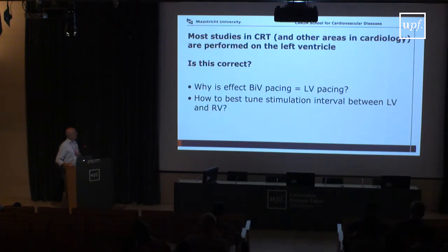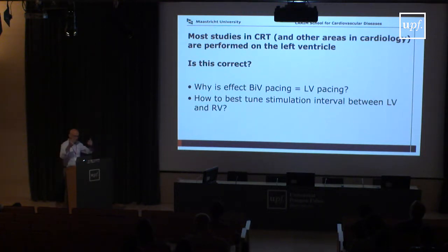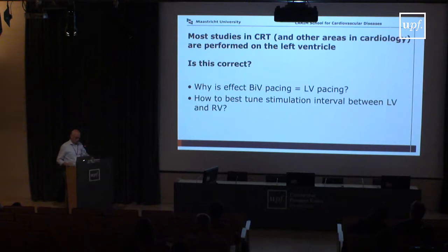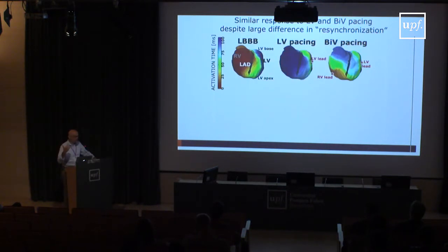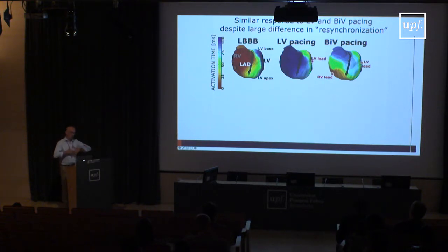Most studies in cardiology and CRT look only at the left ventricle — is this correct? The answer is no. This will be addressed through two research topics: first, why is the effect of biventricular pacing — right and left ventricle together — the same as pacing only the left ventricle? Second, how to tune the pacing intervals. In both cases, the right ventricle is going to be important.